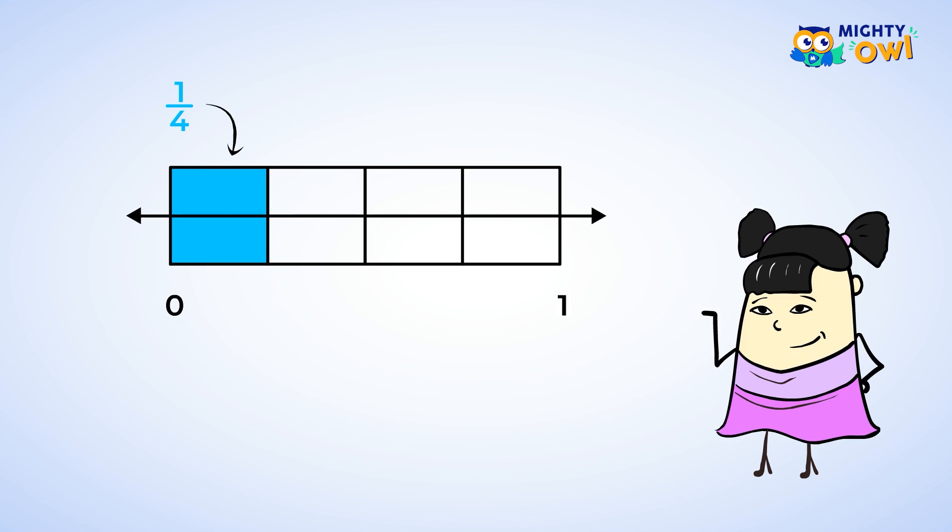But let's get rid of the rectangle altogether. We now have a number line that shows fourths, because one whole is divided into 4 equal parts. Each of the tick marks represents 1 fourth of the whole.